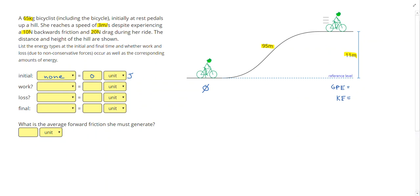The problem says that she was pedaling during the problem, so that means that she's going to have work, or she performed work. She's also going to experience loss due to the backwards friction and the drag. So let's go ahead and list the equations that we're going to need for each of these quantities. I know the equation for GPE equals M times G times H. And for KE is one-half MV squared.